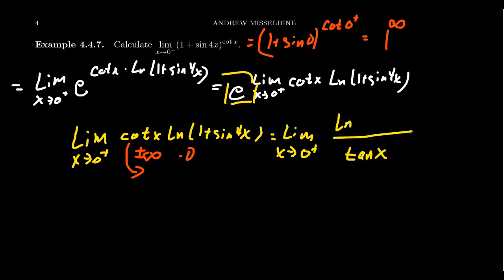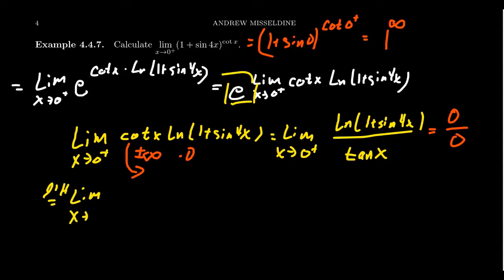So the function now has the form: the natural log of (1 + sin(4x)) over tangent(x). Plugging in x = 0 gives natural log of 1 over tangent(0), which is 0 over 0, so L'Hôpital's rule applies. Taking the derivative of the numerator gives 4 cos(4x) over (1 + sin(4x)) by the chain rule. In the denominator, the derivative of tangent gives secant squared.